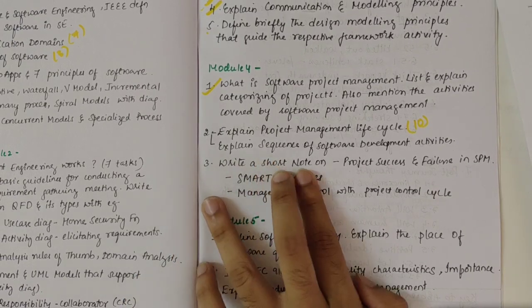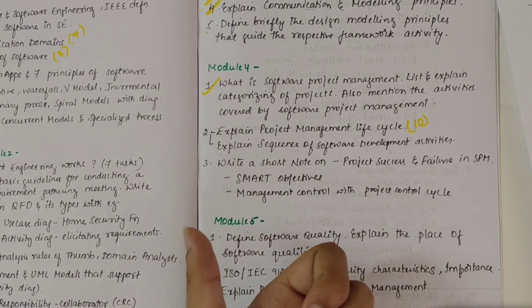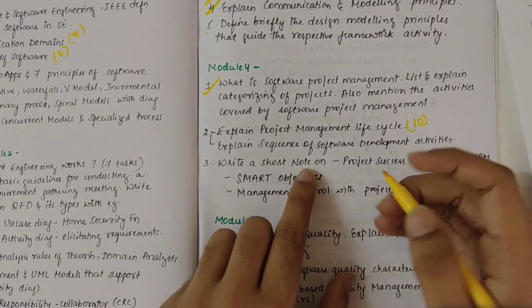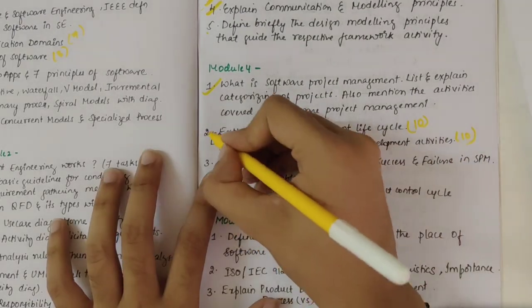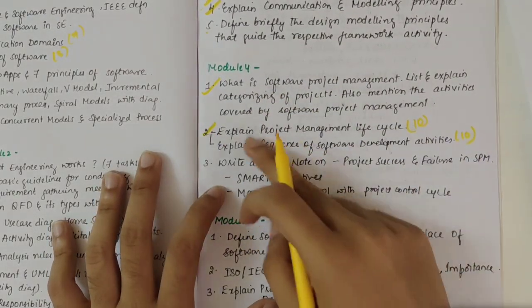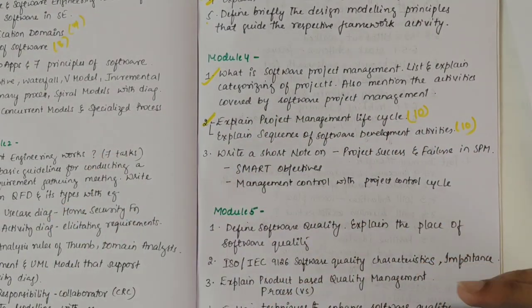After that we have the sequence of software development activities - we have the requirements design code test installation support, that big diagram. This is again a 10 mark question. Out of these two one would be surely asked. I would suggest you to cover study these topics thoroughly. Coming to the third question.